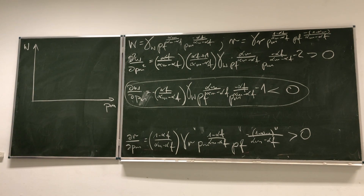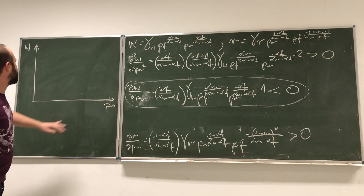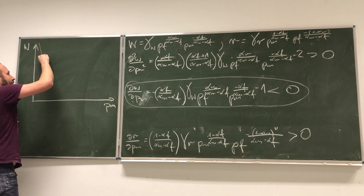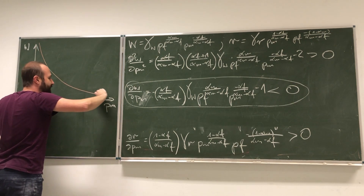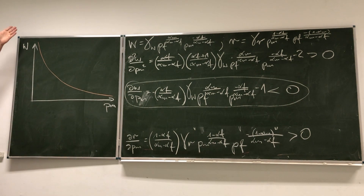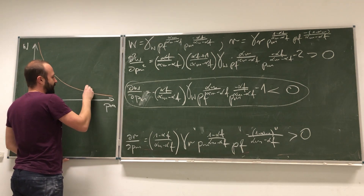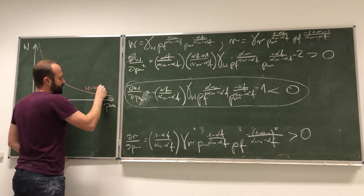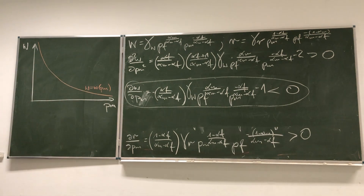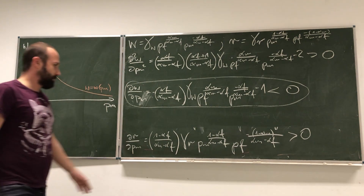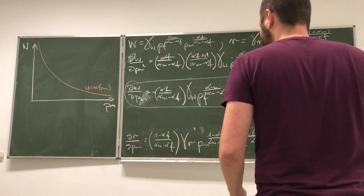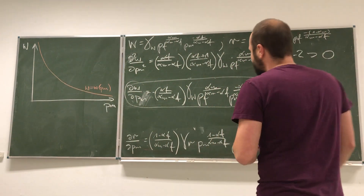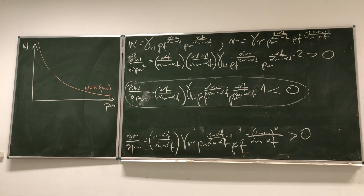Based on that, I can show you on the graph the relationship between price of manufacturers and wage. Generally, we see that as the price of manufacturing increases, wage decreases, but because the second derivative is positive, it decreases slower and slower. Here we have wage as a function of the price of manufacturing.